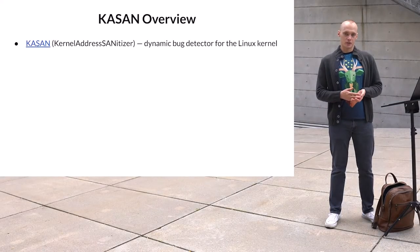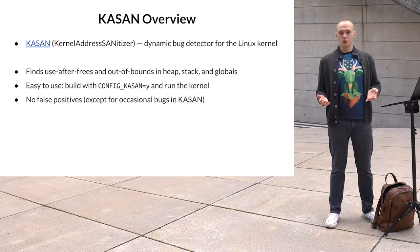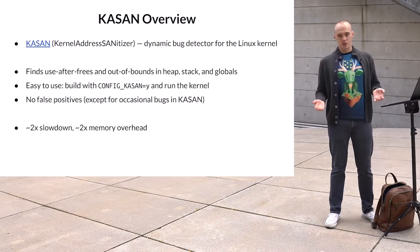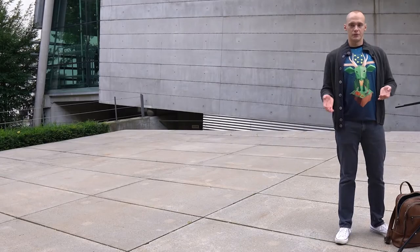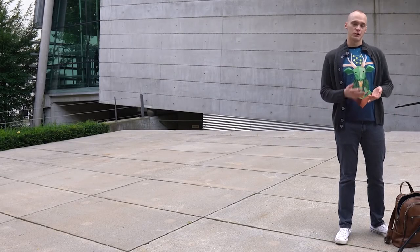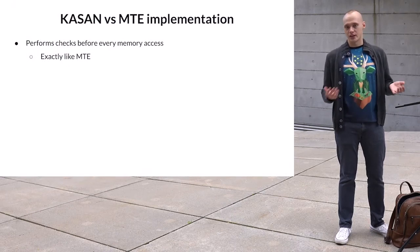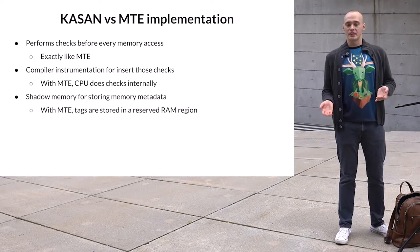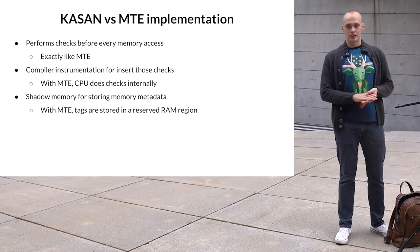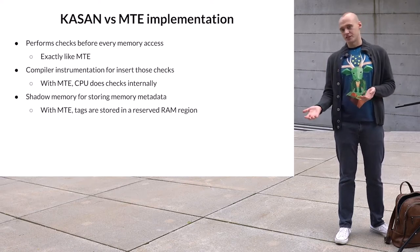KASAN is a memory bug detector for the Linux kernel. It catches many types of memory corruptions, including out-of-bounds and use-after-free. KASAN is the go-to tool for testing and fuzzing, but it significantly slows down execution, so it is impossible to use it in production. If you look at how KASAN works, you will find that it is very similar to MTE. KASAN checks each memory access for correctness, just like MTE. However, KASAN uses compiler instrumentation for that. KASAN stores metadata for each memory cell in shadow memory, which it pre-allocates, and that metadata is how KASAN keeps track of which memory is accessible and which is not.